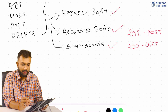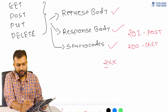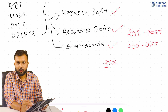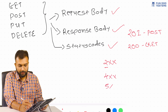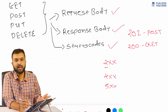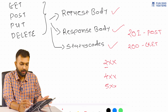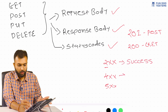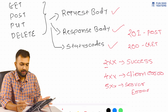For a GET request, the response code structure will be 2xx, meaning it starts with 2. Then there is 4xx, and the last one is 5xx. These are the basic response codes to remember: 200 means success, 400 means client error, and 500 means server error.